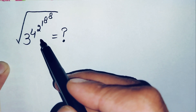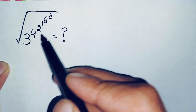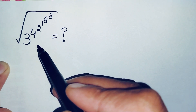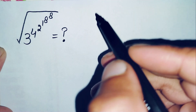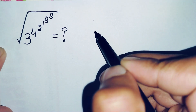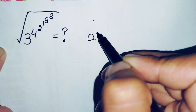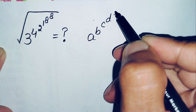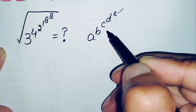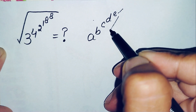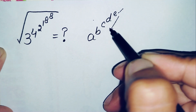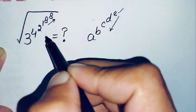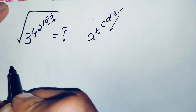So how can we solve a square root number like this having five powers in the base? When we have such a problem, we will use a result we need to remember. We have powers in the form a raised to power b, raised to power c, raised to power d, raised to power e, and so on. We will solve the powers from top to bottom, moving down.